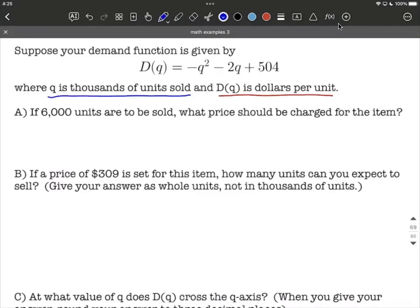In part A, it asks us if 6,000 units are to be sold, what price should be charged for the item? So 6,000, we're thinking that's a quantity, so we're thinking q should be 6,000. But I want us to be careful about this. Because q is in thousands, we can't plug in 6,000. We have to say q equals 6, because q is defined to be in thousands. So we have a value for q. We want to replace each of the q's in our function with 6.